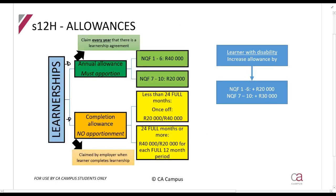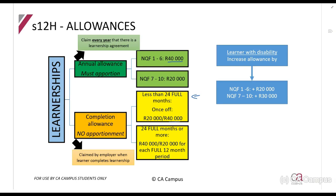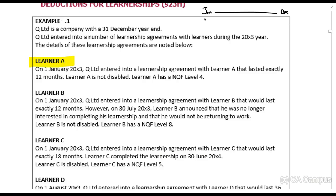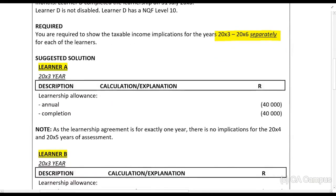Since the contract lasted exactly 12 months, we get two allowances: the annual allowance and the completion allowance. Learner A is NQF level 4, so the company gets R40,000 for the annual allowance. Learner A also completed the learnership in less than 24 full months, so we get another R40,000 completion allowance. For 20X3: R40,000 annual + R40,000 completion.